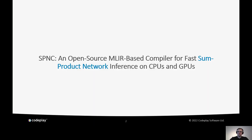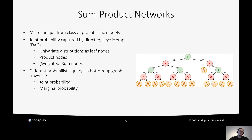First part: sum-product networks. What are sum-product networks? They are a machine learning technique from the class of probabilistic models. They try to capture a joint probability distribution through a directed acyclic graph consisting of three types of nodes: leaf nodes that capture univariate distributions, product nodes, and weighted sum nodes. If you have obtained such an SPN graph, you can run different probabilistic queries via a bottom-up graph traversal, asking for something like a joint probability or a marginal probability.